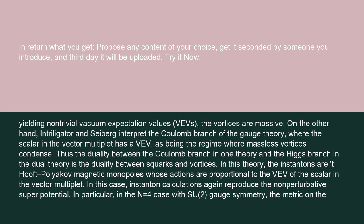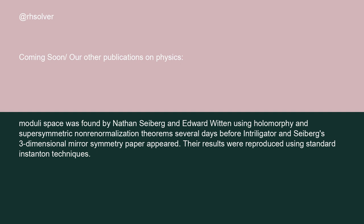In particular, in the N equals four case with SU(2) gauge symmetry, the metric on the moduli space was found by Nathan Seiberg and Edward Witten using holomorphy and supersymmetric non-renormalization theorems, several days before Intriligator and Seiberg's three-dimensional mirror symmetry paper appeared. Their results were reproduced using standard instanton techniques.